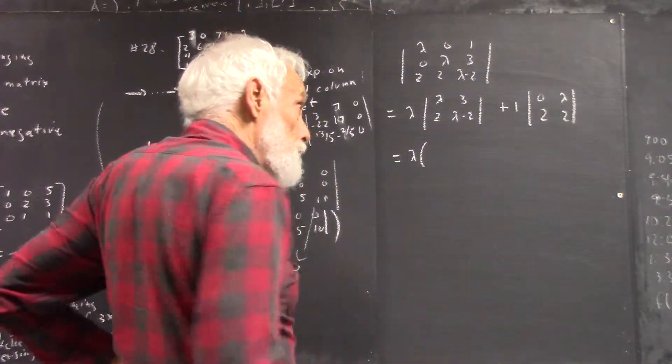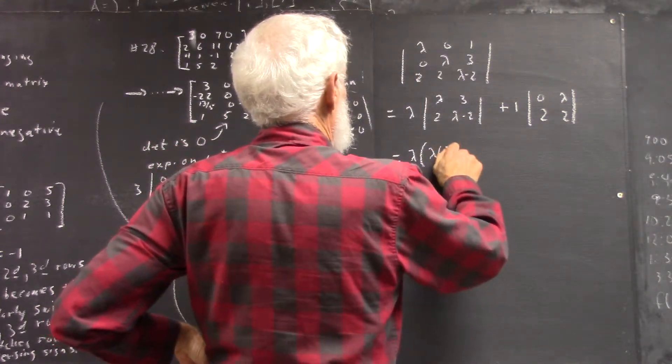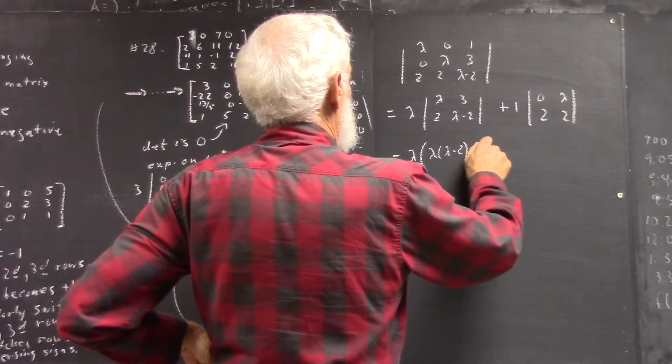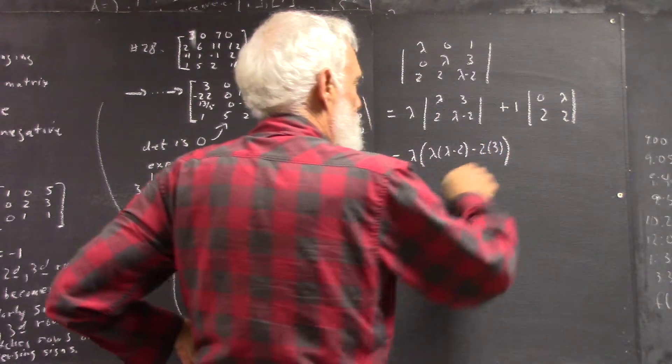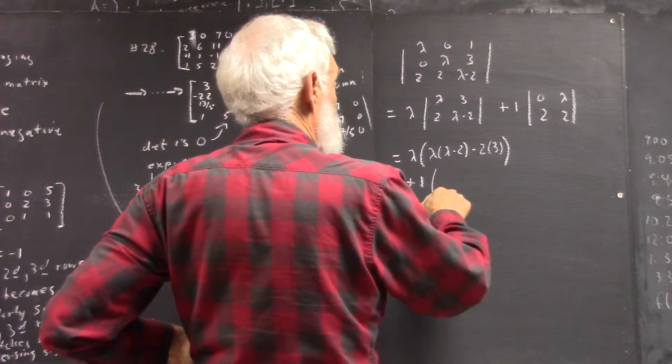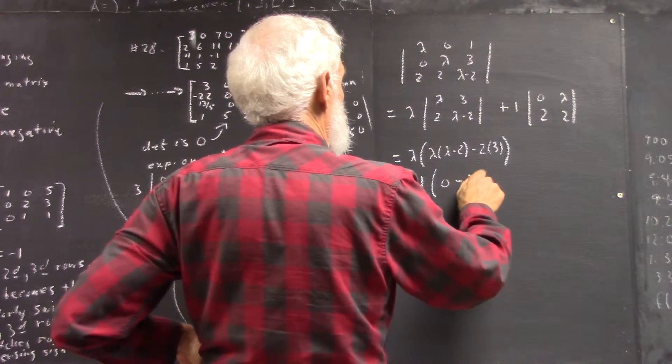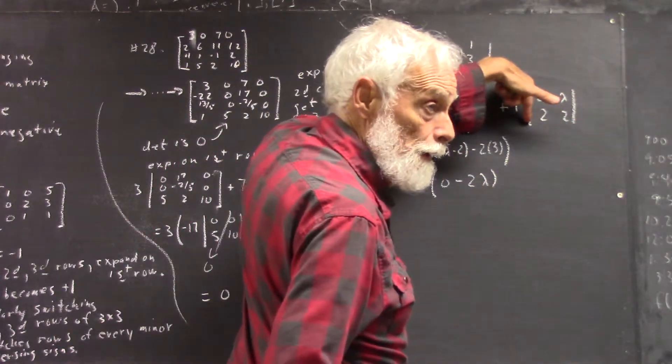Well, that's lambda times this minus this. That's lambda times lambda minus 2, minus 2 times 3, plus 1 times 0 minus 2 lambda, because the determinant there is 0 and negative 2 lambda.